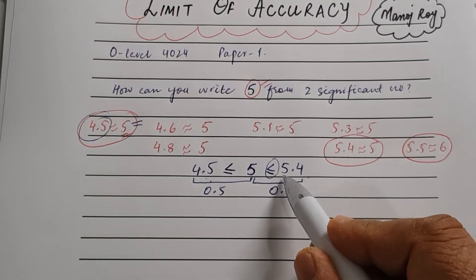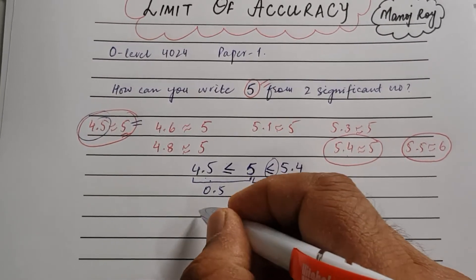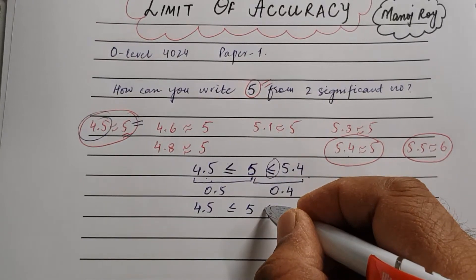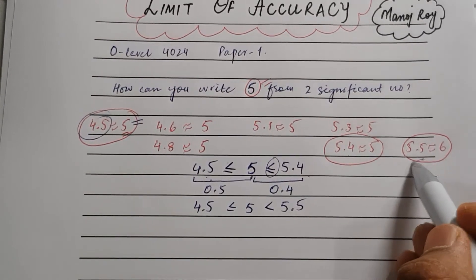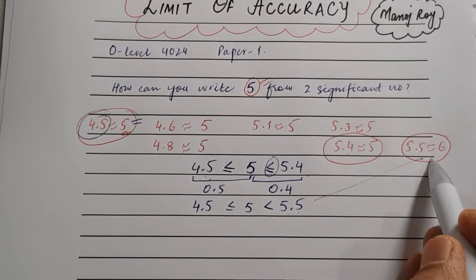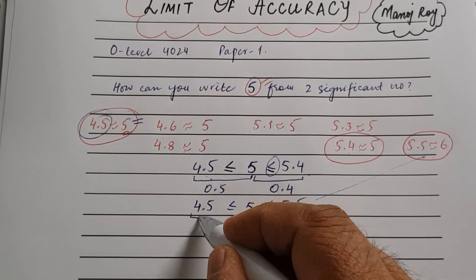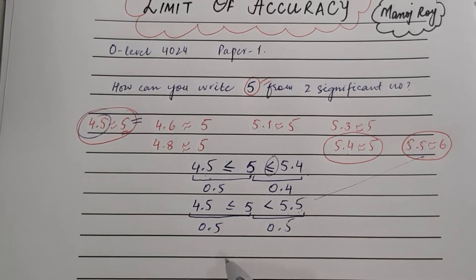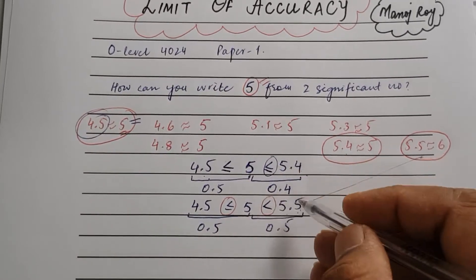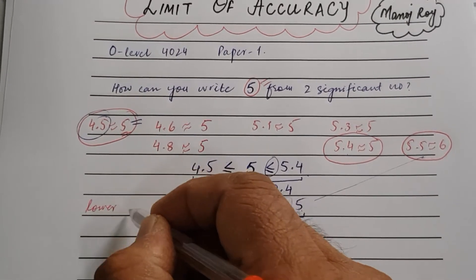Notice that 4.5 uses 'equal to or greater than,' but the upper limit should be 'less than 5.5' — not equal to 5.5, because 5.5 would give 6. So we can write the upper bound as strictly less than 5.5. Now the difference on both sides is 0.5, making them equal. The lower value 4.5 is called the lower bound.